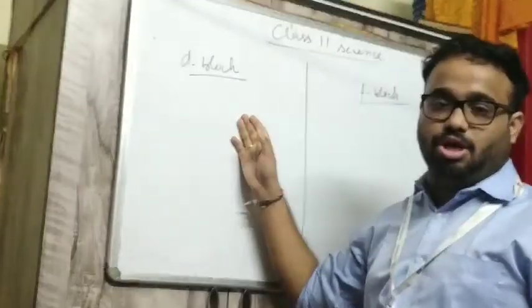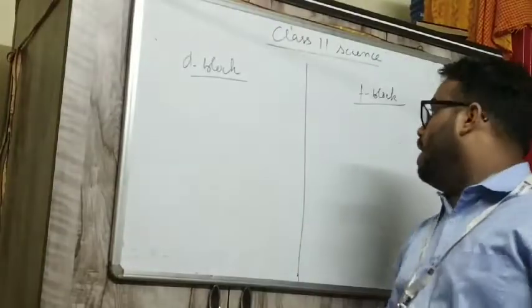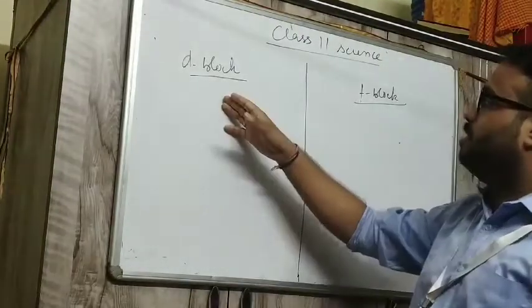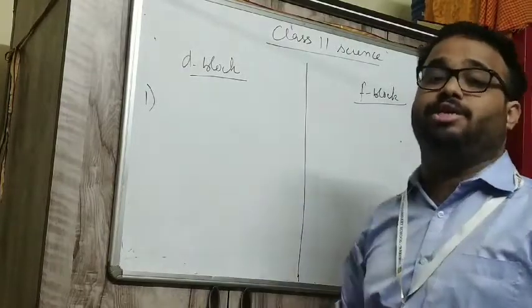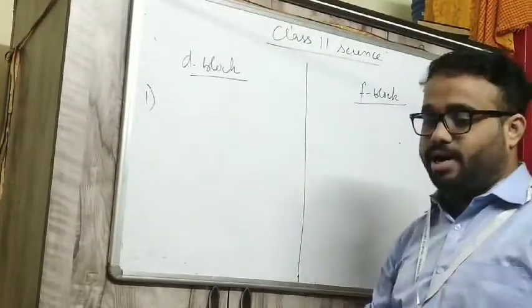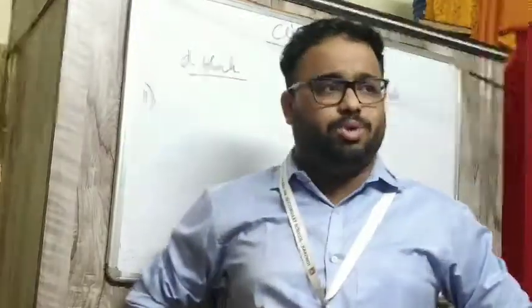Yesterday we did properties of s block and p block. Now we are discussing properties of d block and f block. So first we have to write the electronic configuration.